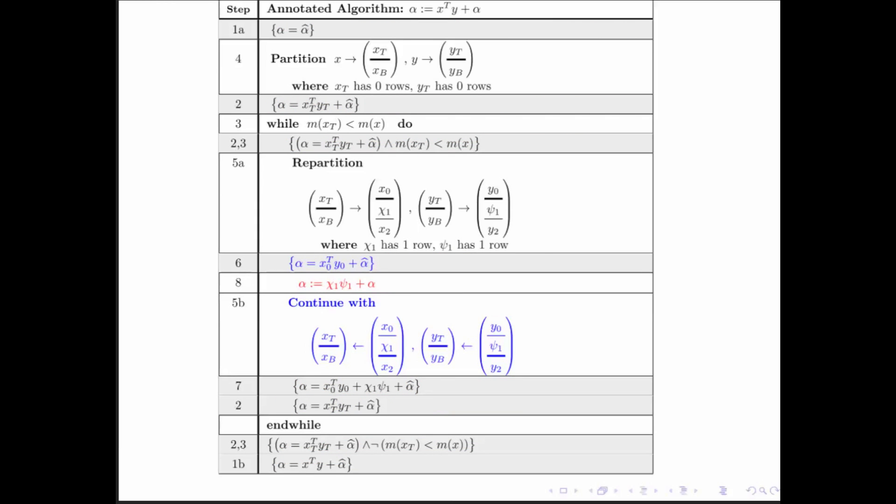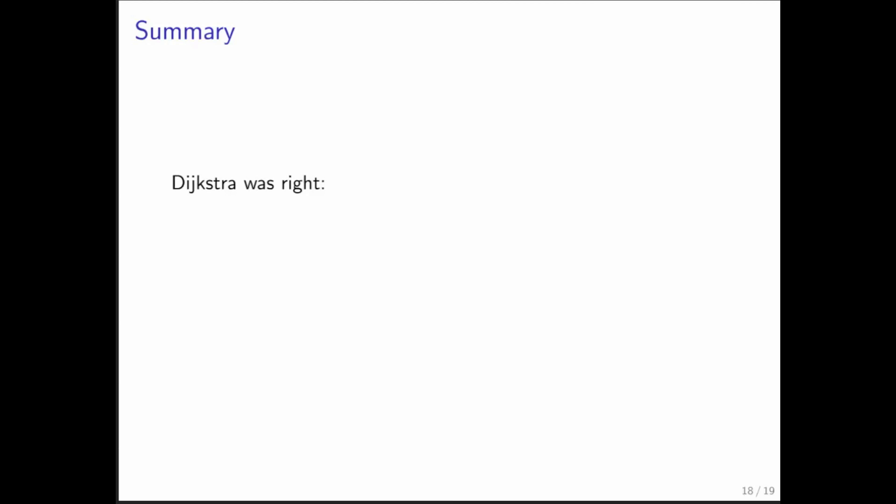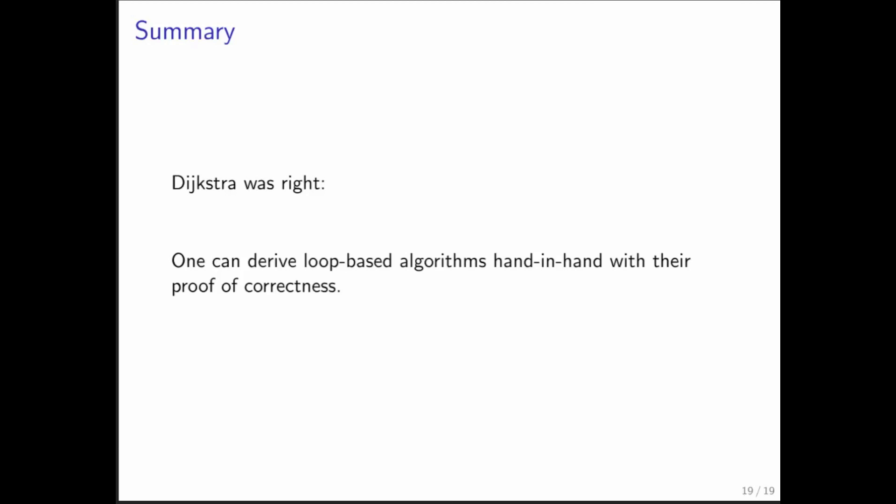This hopefully gives you some idea of, number one, how the principle of mathematical induction is related to proving loops correct or deriving them to be correct, and number two, the fact that this vision of goal-oriented programming that Dijkstra had in the early 1970s — we can actually already achieve with what you have learned in the class. So in the end we conclude that Dijkstra may have been right: one can derive loop-based algorithms hand in hand with their proof of correctness.